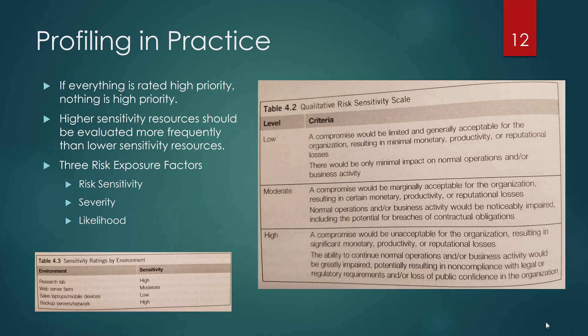The first major consideration is: if everything is high priority, then nothing is high priority. As you sort out the priority and sensitivity of all your systems, if everything is ranked high, you're ranking it incorrectly. Your higher-sensitivity resources need to be evaluated more frequently than your lower-sensitivity ones. The tiering system I use is either three or four tiers — you can see an example of a three-tier system (low, moderate, and high) on the slide, from table 4.2 in the book. Things rated high — unacceptable to the organization with significant monetary, productivity, or reputational losses — must be reviewed more frequently than moderate and low items.